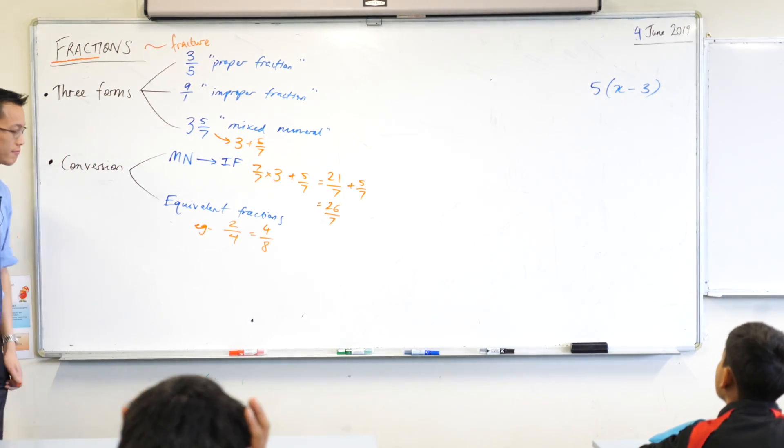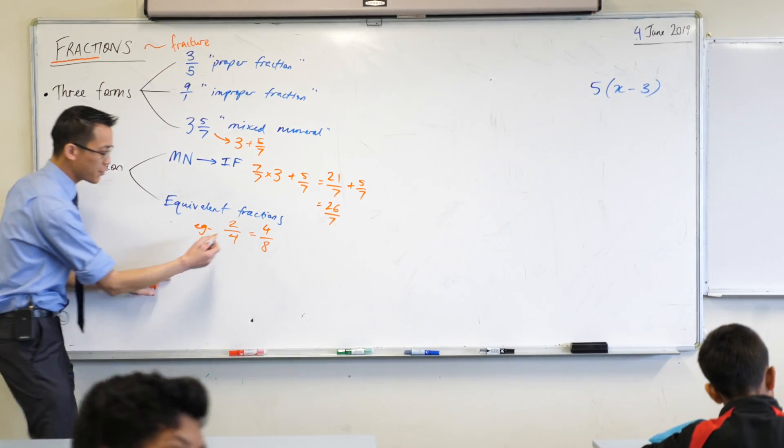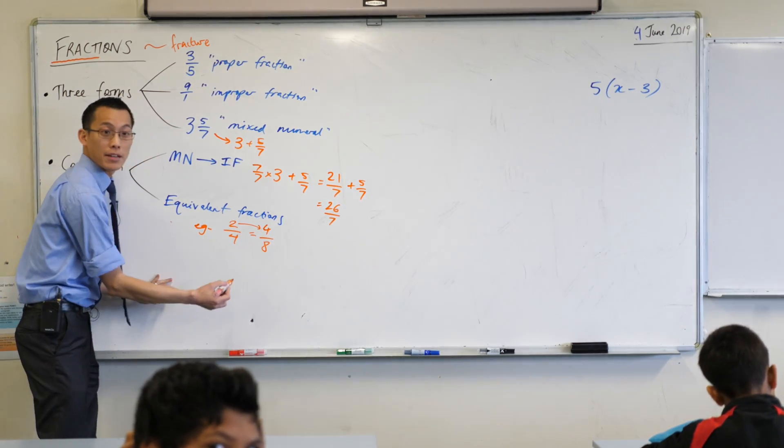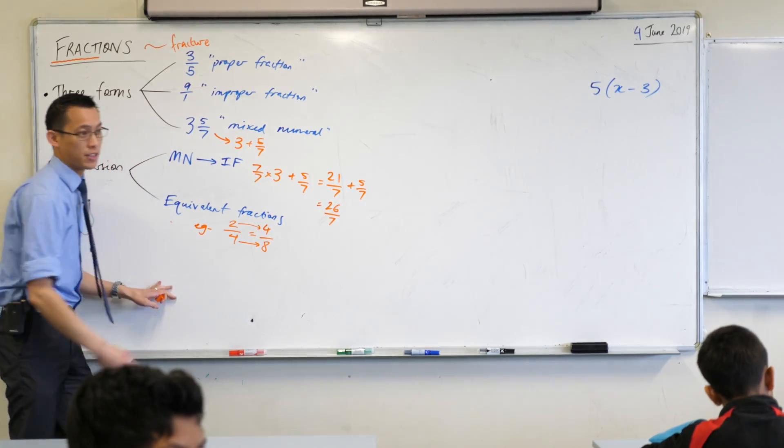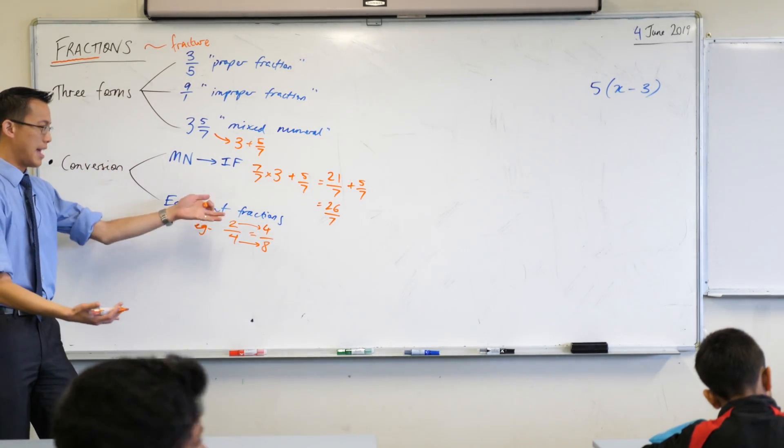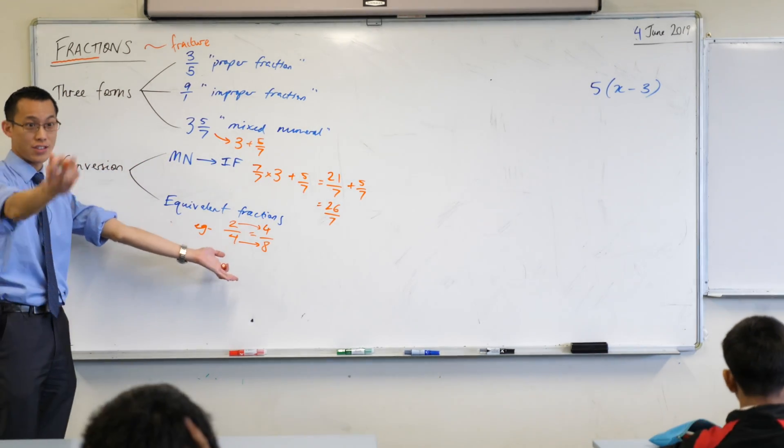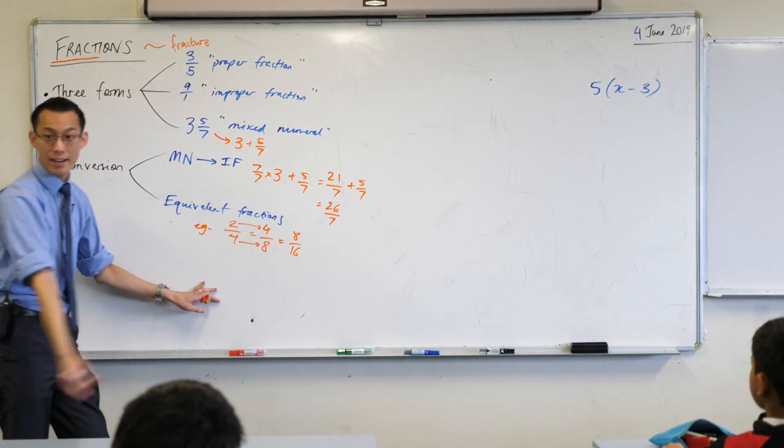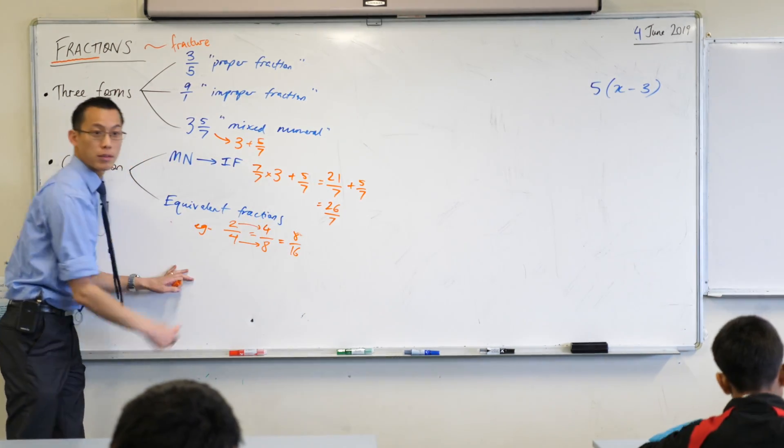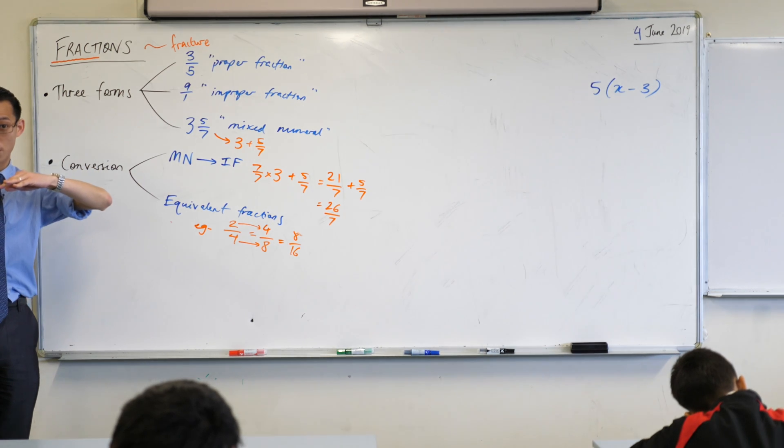You basically just times both by two. You've taken the numerator and multiplied by two, and then you took the denominator and you also multiplied that by two. Could someone give me maybe one more equivalent fraction to both of these? 8 over 16. We've doubled again, or you could have gone straight over by multiplying by four. Top and bottom is really important.